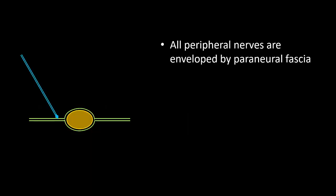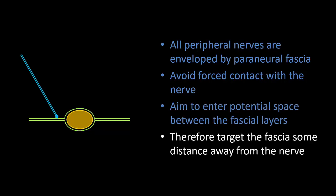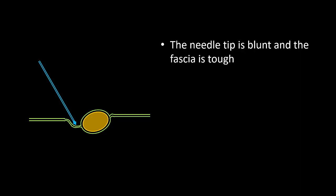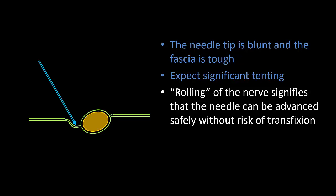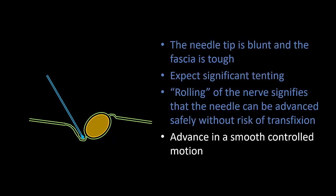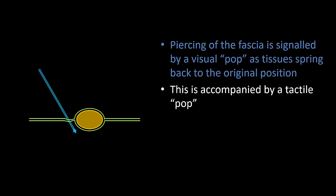This next sequence illustrates the concept of how to safely pierce and enter any perineural sheath of a nerve. Avoid contact with the nerve if possible. Just aim to enter the potential space between the two opposing fascia layers. I therefore usually aim to pierce the fascia a little distance away from the nerve itself. Remember that you are trying to pierce a tough fascia layer with a blunt needle and therefore significant tenting and stretch of the fascia will occur before it is pierced. Look to see that the nerve is rolling away as the needle is pressed forward — this means that it is not at risk of transfixion as you pierce through. The needle should be advanced in a smooth controlled motion rather than a jabbing or stabbing motion.